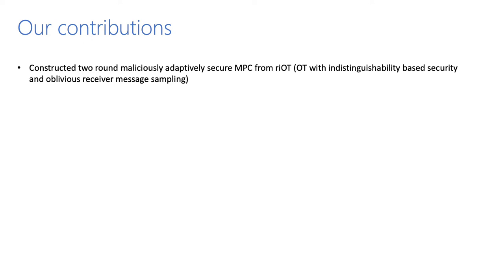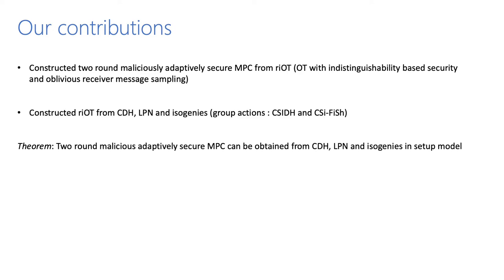We ask whether we can construct two-round adaptively secure MPC from more assumptions. We demonstrate that a two-round OT with indistinguishability-based security and something called oblivious receiver message sampleability implies two-round adaptively secure MPC. We call this OT primitive RIOT, and it is a much weaker OT primitive compared to adaptively secure OT. We then build RIOT from CDH, LPN, and isogenies, yielding the first two-round adaptively secure MPC protocol from CDH, LPN, and isogenies in the malicious setting, and from LPN and isogenies in the semi-honest setting.